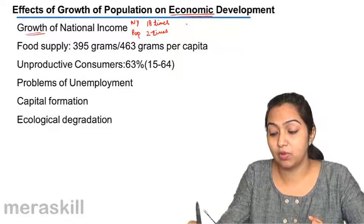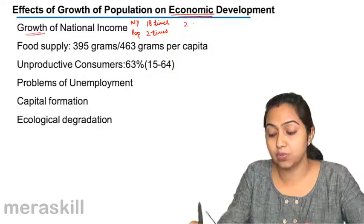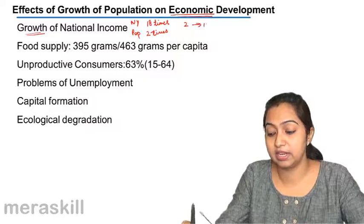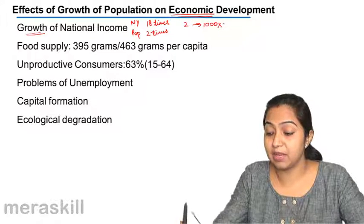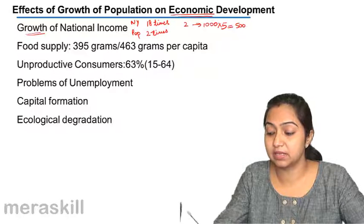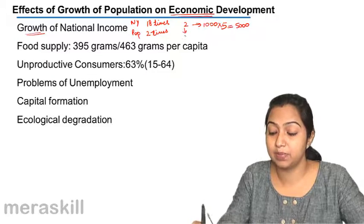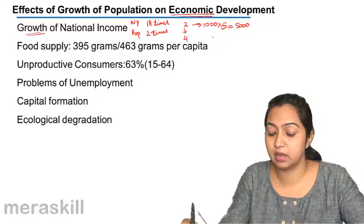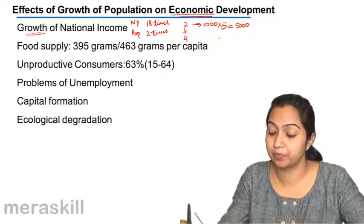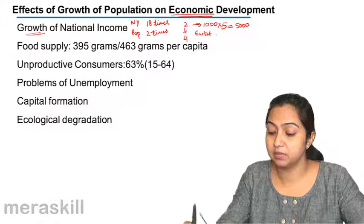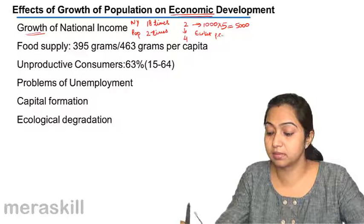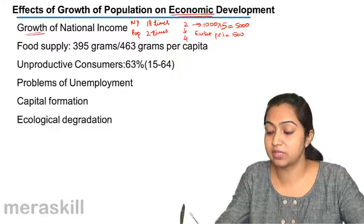Suppose you have a family of 2 people where the income is 1000 rupees per month. Now the family income multiplies and grows by 5 times, so it becomes 5000. And the number of people in the family also increases by double — it goes to 4. So earlier, what was the per capita income? It was 500, that is, 1000 divided by 2.